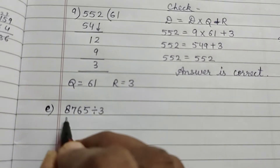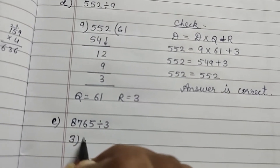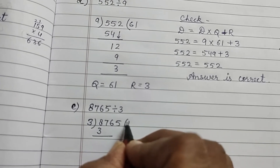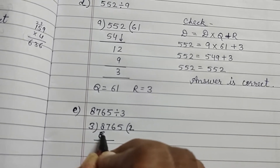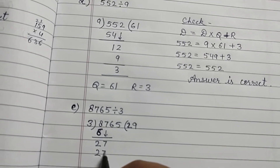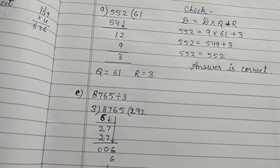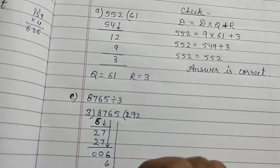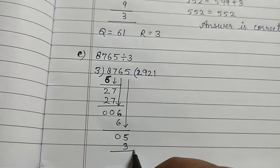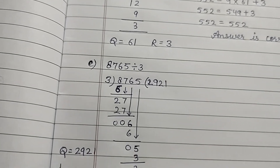Now Part E: 8765 divided by 3. 3 goes into 8 — 3 into 3 is 1. 8 minus 6 is 2, bring down 7. 3 into 27 gives 9. Then 3 into 6 gives 2. 3 into 5 gives 1, remainder 2. So quotient is 2921 and remainder is 2.